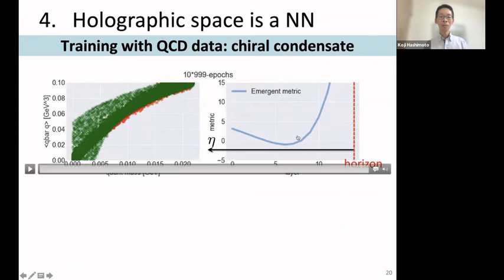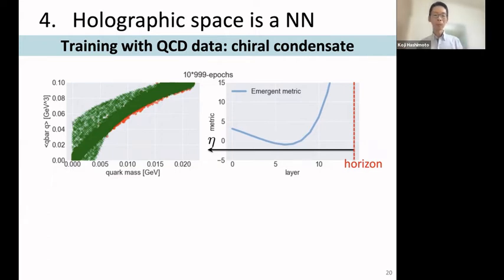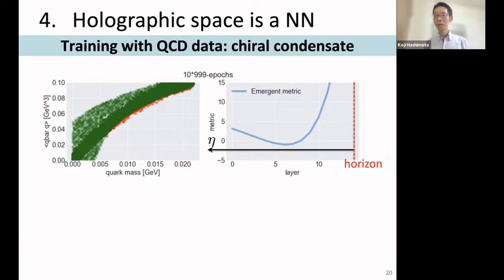The result is interesting: the emergent geometry H has a dip and then rises — the rising behavior is nothing but the black hole horizon condition. The neural network automatically learned the presence of a horizon, which was not explicitly imposed. This training can also be done with neural ODEs, a machine learning technique for determining Hamiltonians in continuous space without requiring explicit discretization. In this way, the geometry H is fully determined.